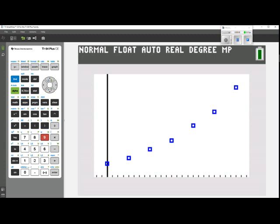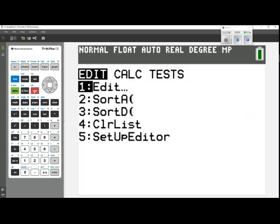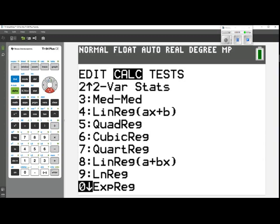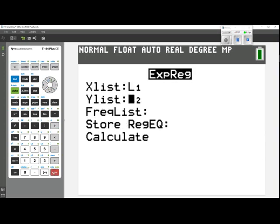And the next thing we want to do is find the exponential model. So we can go back to stat, over to calculate, and go down until we find exponential regression. Select that, use list 1 and list 2, and then let's store the regression equation in our y equals menu.